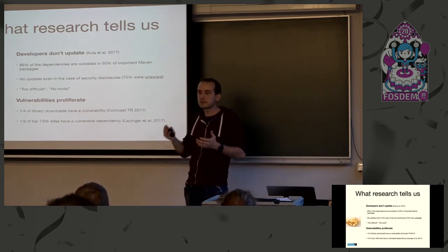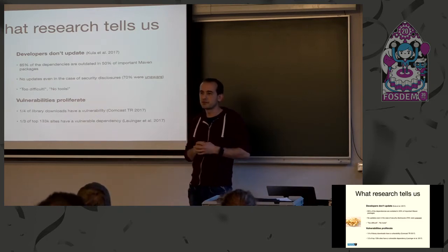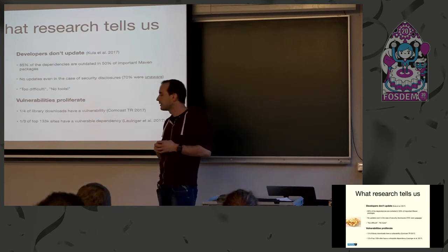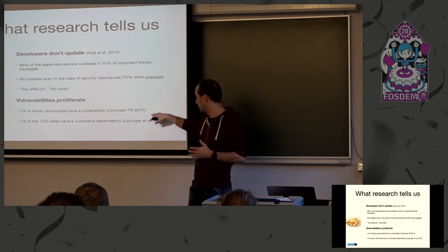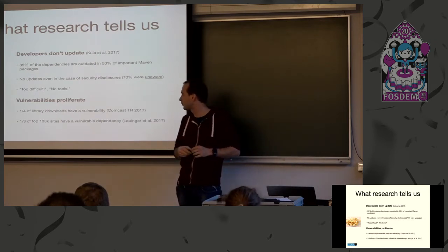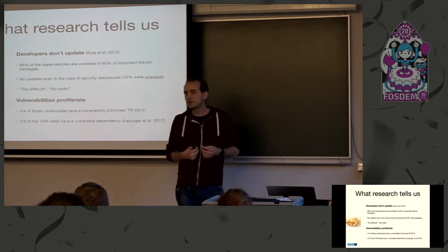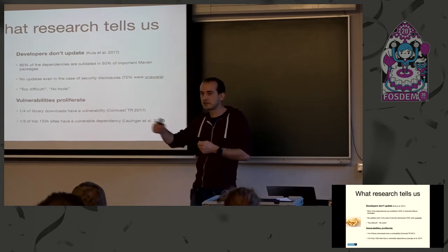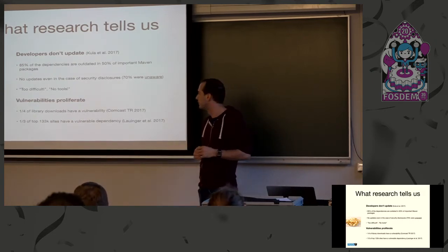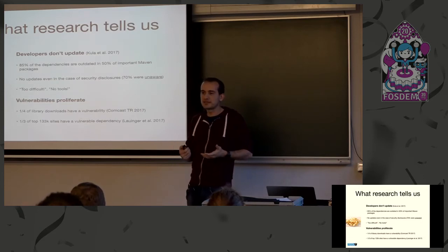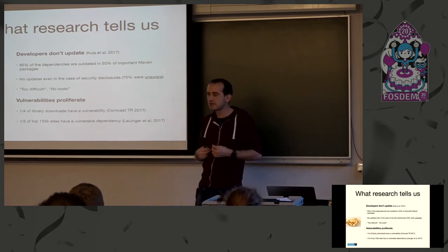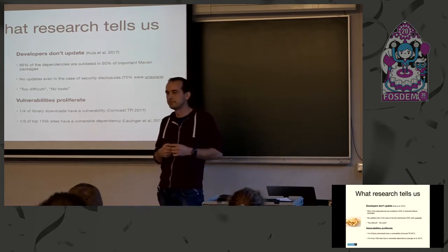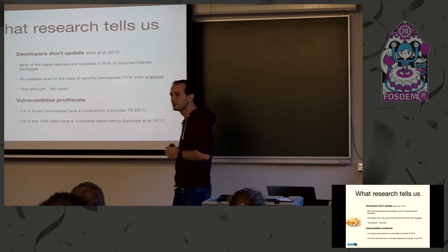Developers said they were simply unaware of those security problems, and as a result vulnerabilities proliferate in ecosystems. A technical report by Comcast in 2017 showed that one-fourth of all library downloads actually include a vulnerability in the transitive closure — not necessarily in the library itself — and one-third of the top 100k sites include a vulnerable dependency in their JavaScript code base.